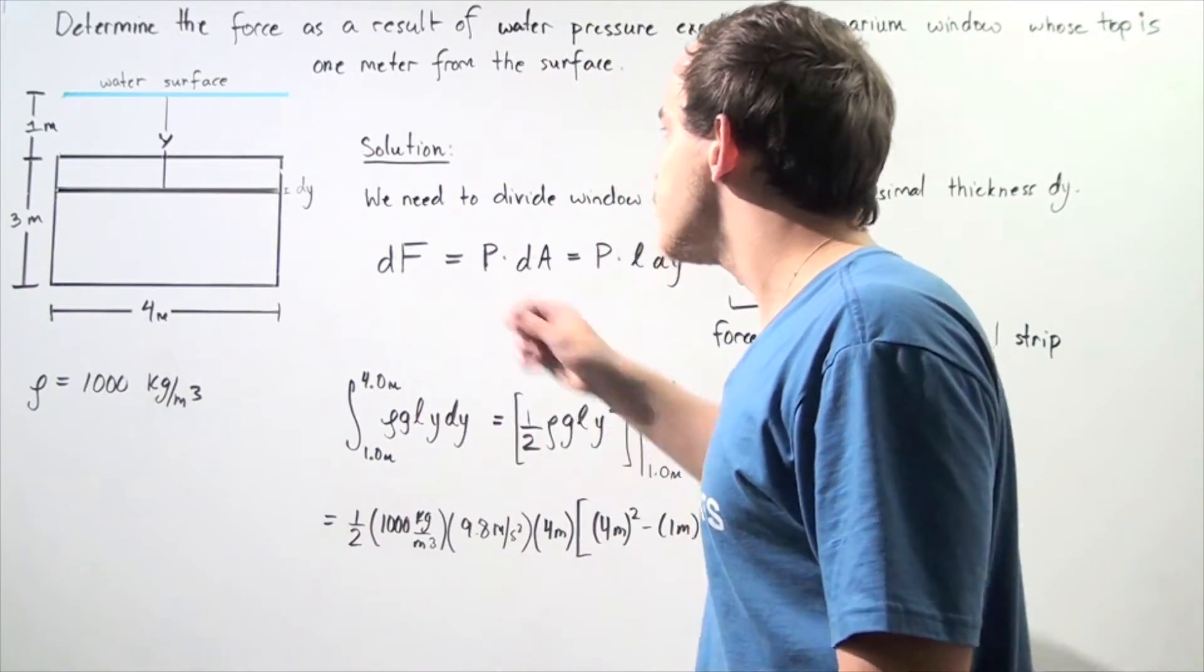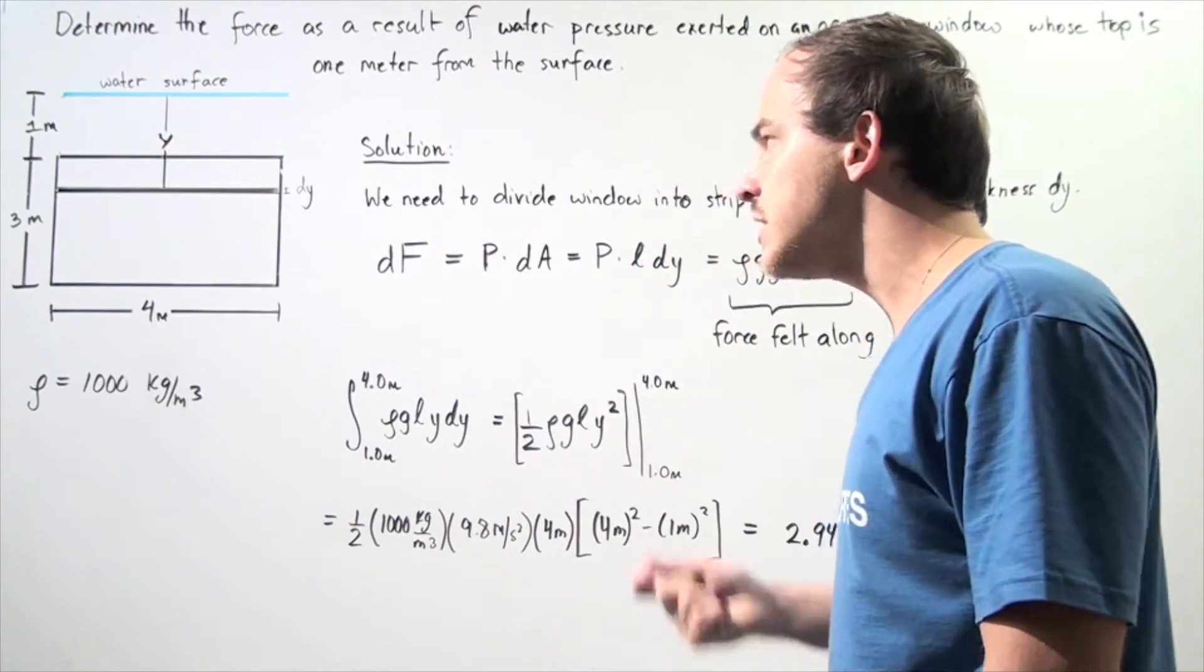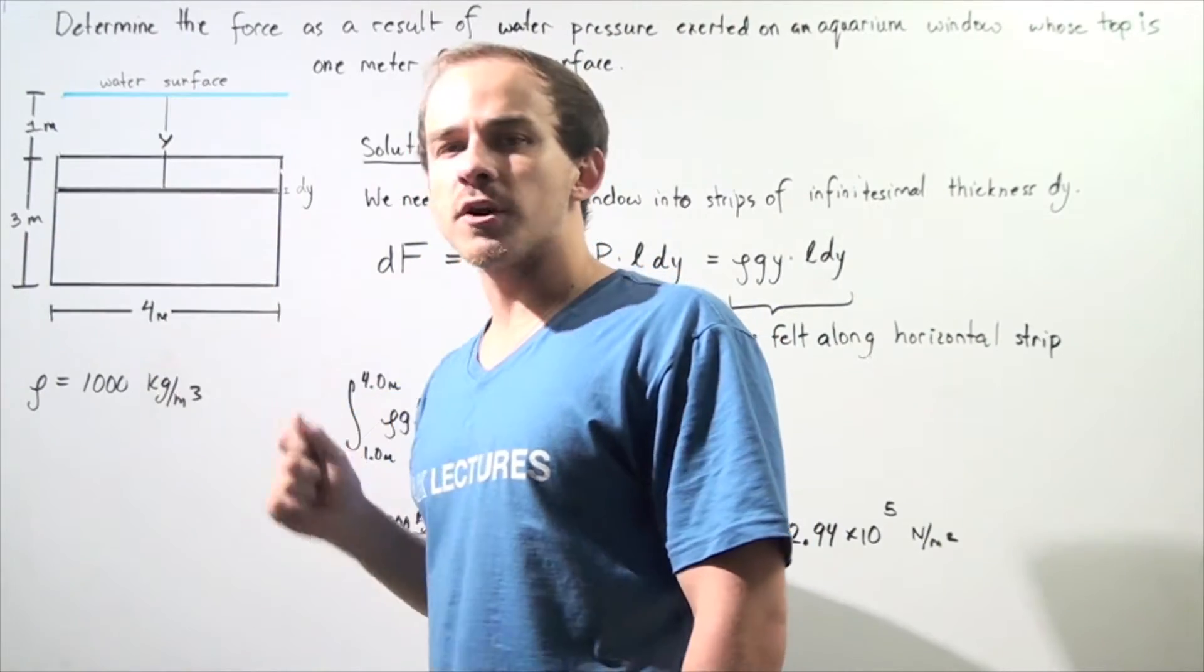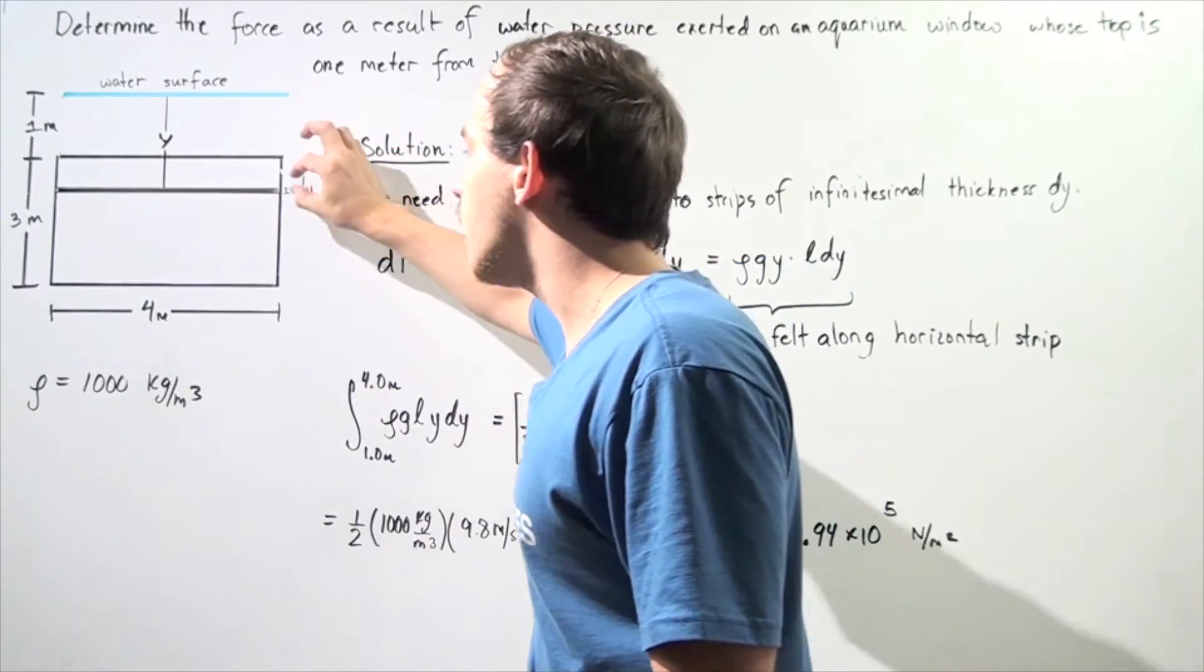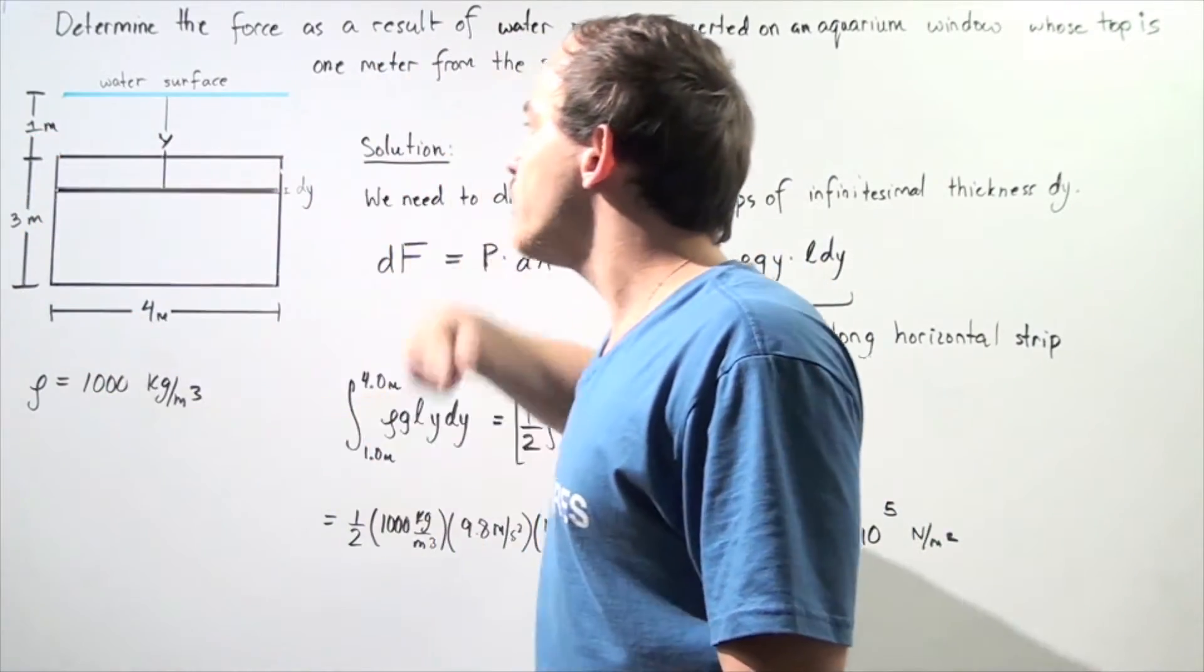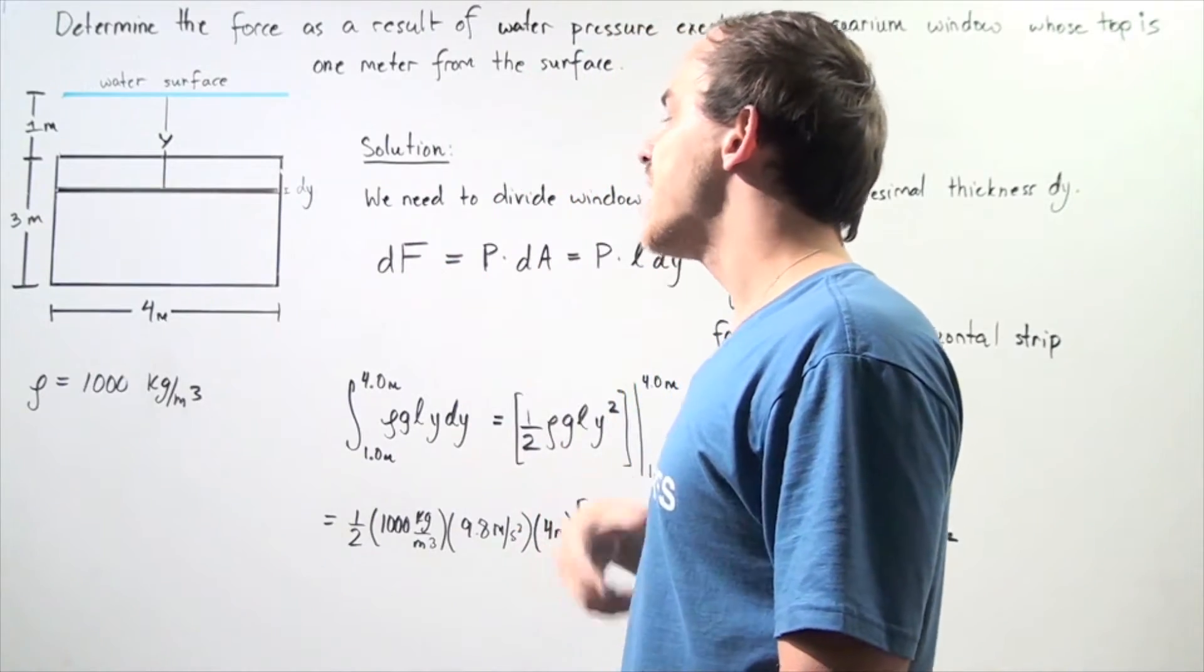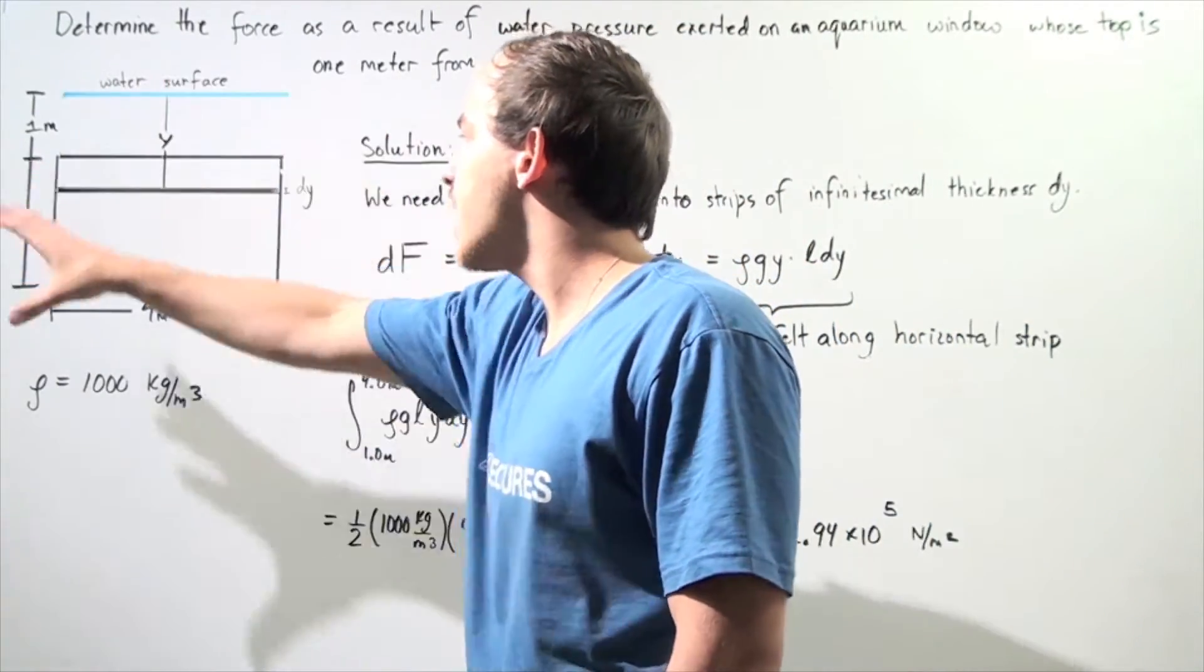In other words, we essentially divide this entire window into strips of infinitely small thickness dy and length of four meters. Then we calculate the individual force felt along this strip, and then we continue that. We sum up all the individual strips, and that will give us the entire force as felt by the entire window.